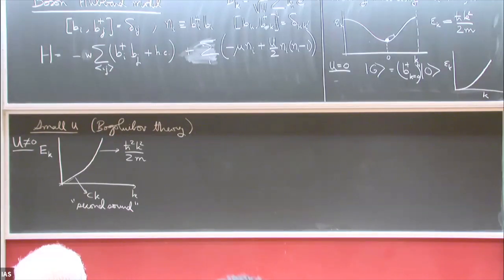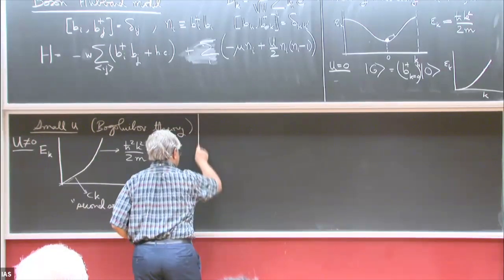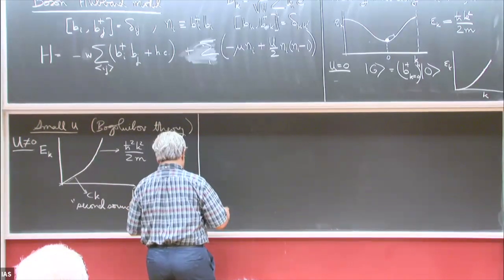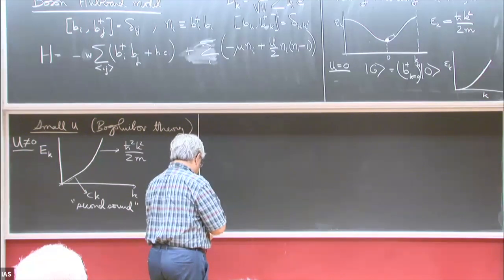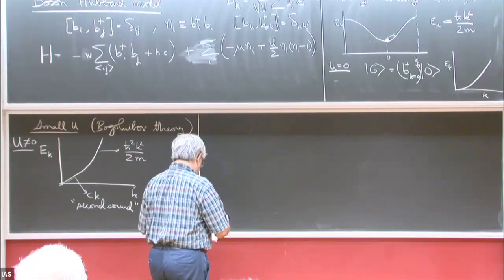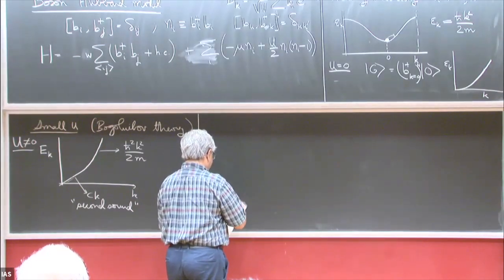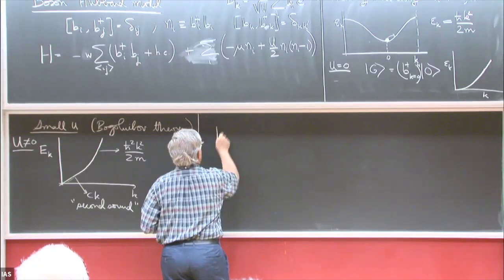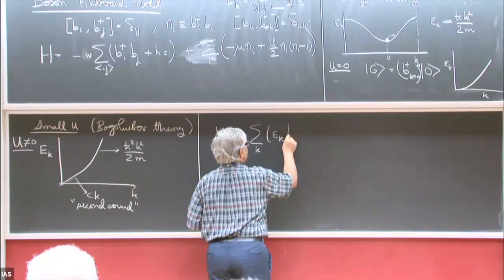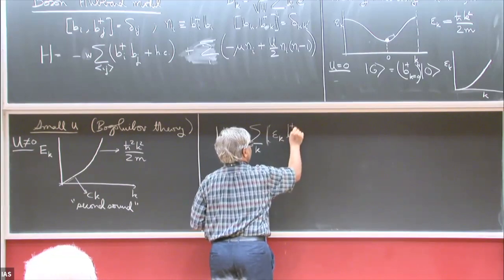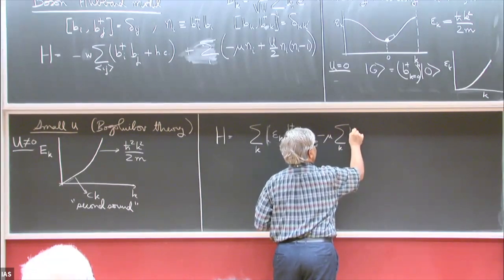It's useful to think about this in the grand canonical ensemble. I'm going to go to momentum space and write the Hamiltonian. The Hamiltonian in momentum space is: sum on k of epsilon_k times b-dagger_k b_k, minus mu times sum on k of b-dagger_k b_k, plus the interaction term.